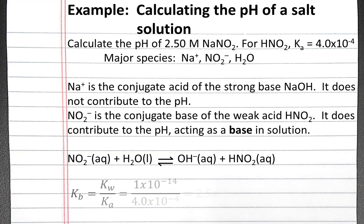Because nitrite is acting as a base, we'll need to calculate its Kb value. We can calculate the Kb value for nitrite from the Ka value for nitrous acid. The Kb value equals Kw divided by Ka.